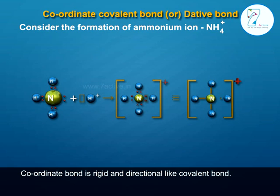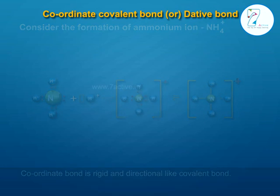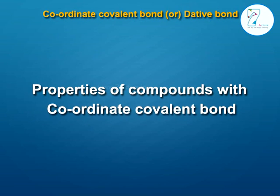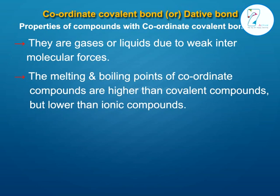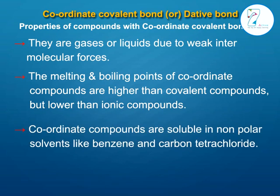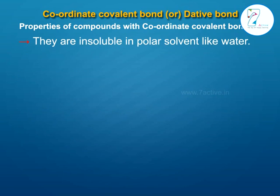The coordinate bond is rigid and directional, like a covalent bond. Properties of compounds with coordinate covalent bonds: they are gases or liquids due to weak intermolecular forces. Their melting and boiling points are higher than covalent compounds but lower than ionic compounds. Coordinate compounds are soluble in non-polar solvents like benzene and carbon tetrachloride, but insoluble in polar solvents like water.